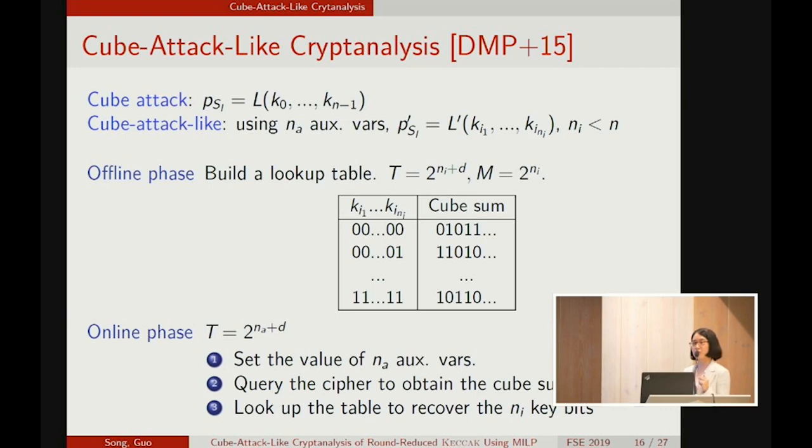So that the superpoly depends on the smaller set of key bits. Let's say nI key bits. Once a cube with parameters nA and I and D is found, the attack proceeds in two phases. In the offline phase, the attacker builds a lookup table which stores the cube sums corresponding to all possible nI key bits.